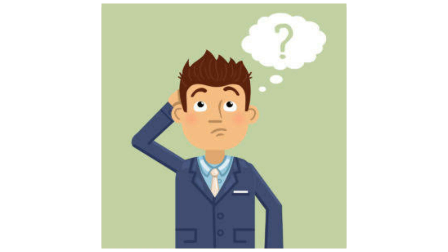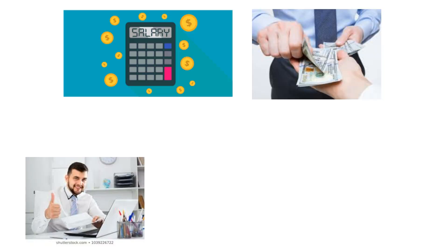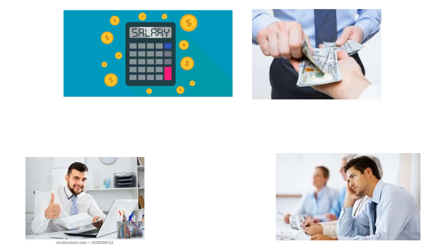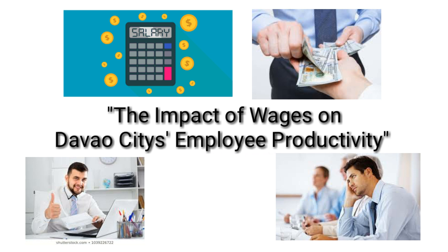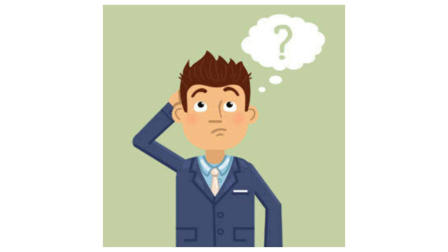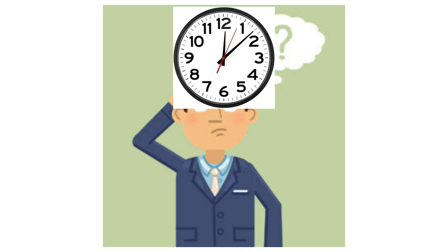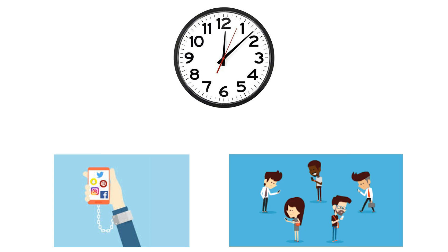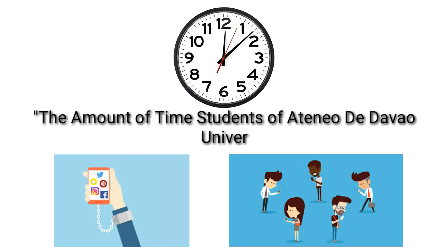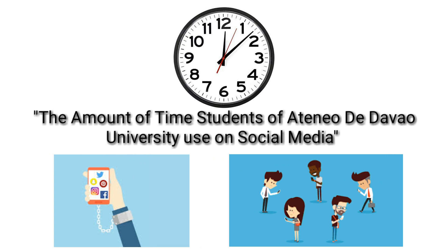If you want to study how the salary or wage affects the productivity of the employee, this can be the title: Impact of Wages on Davao City's Employee Productivity. If you want to know how many hours or minutes students use social media, this can be the title: The Amount of Time Students of Ateneo de Davao University Use on Social Media.